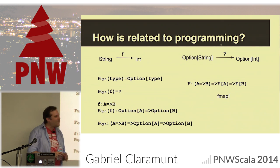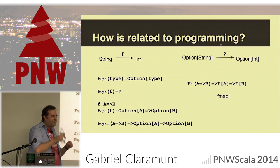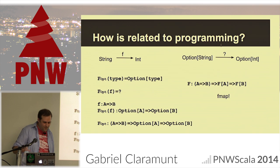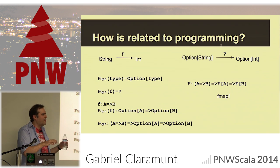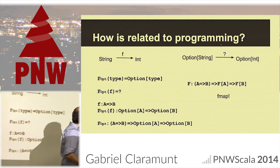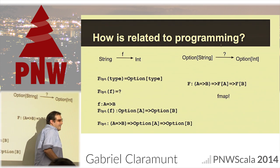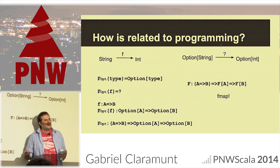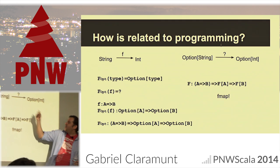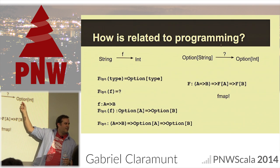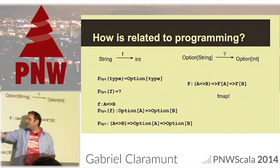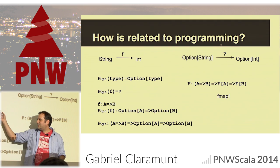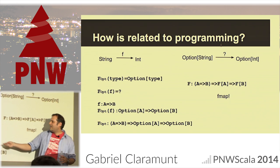Because what comes later with monads is more complicated. A question: f map only maps the functions — what happens with the objects? Well, the type constructor itself is your mapping of the objects. If you have Option, it already tells you how to create an Option of any type — that's your mapping of objects. The hard part is mapping the functions, which is what fmap gives you. If you can instantiate the Functor type class, you already have the object mapping; you just need to provide how to map the functions.